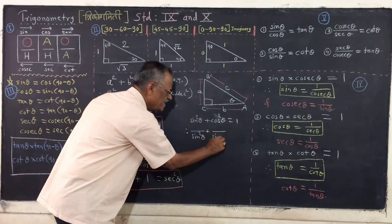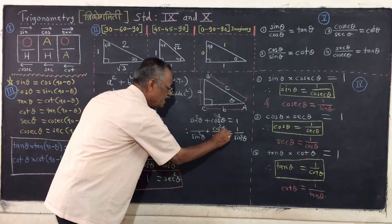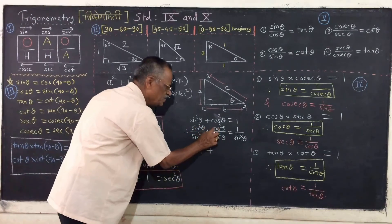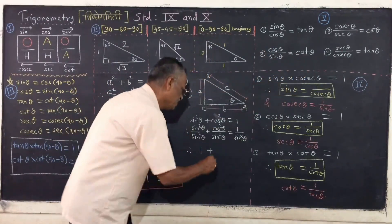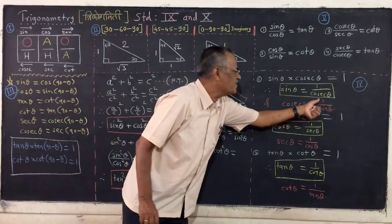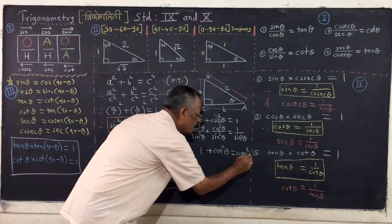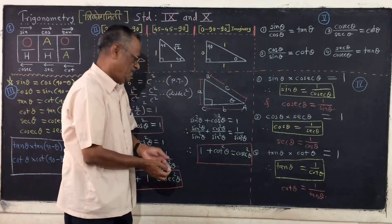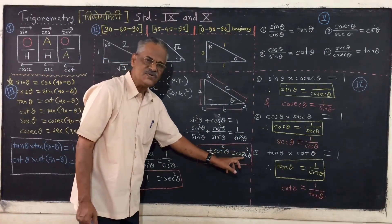Dividing by sine squared theta: cos squared theta upon sine squared theta, plus sine squared theta upon sine squared theta, gives 1. You know that cos theta upon sin theta is cot theta. So cot squared theta plus 1 is equal to 1 upon sine squared theta. And 1 upon sine theta is cosec theta, so the identity becomes: 1 plus cot squared theta is equal to cosec squared theta.